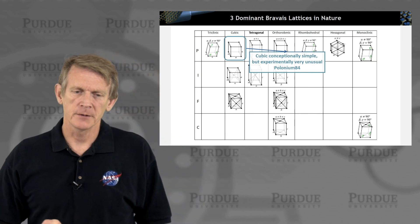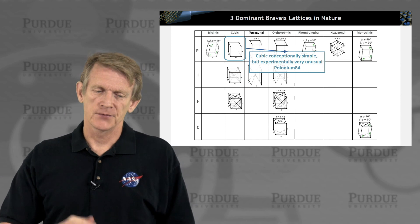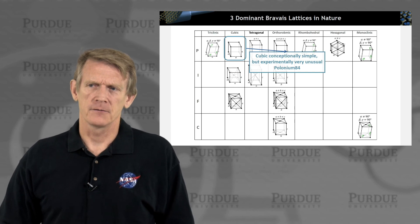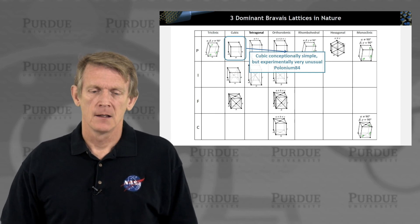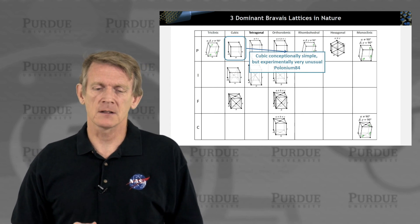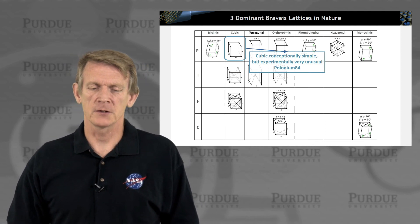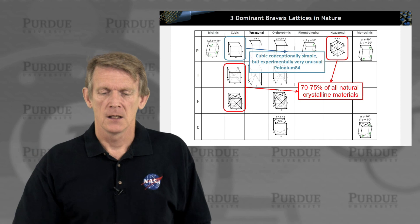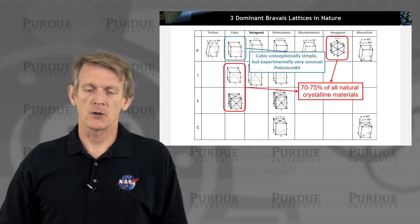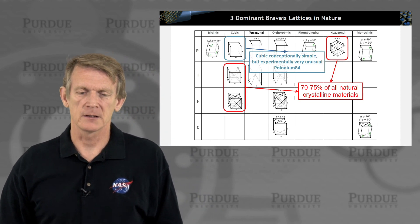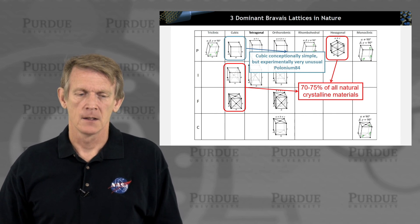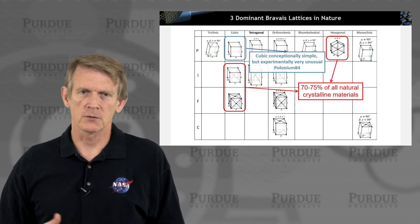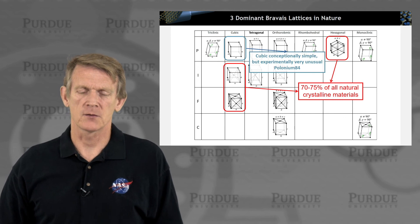Now, where do they show up in nature? Certainly from an intellectual point, the cube is the perfect example of a space group. It's very symmetric, but it turns out it's experimentally very unusual. There's an example of polonium-84, but really this hardly ever occurs in nature. 70 to 75 percent of all natural crystalline materials show up in these red space groups. So hexagonal, body-centered cubic, or face-centered cubic. So most crystalline materials are really showing up in these three space groups.